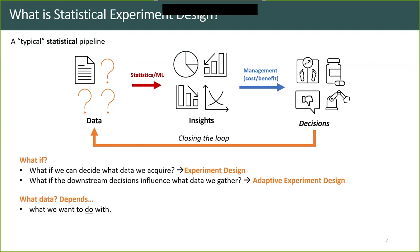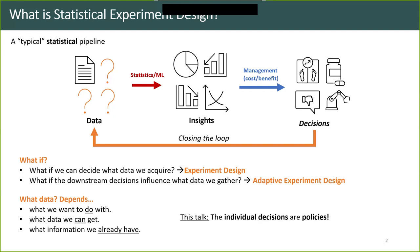If the decisions further influence what data we acquire — closing the loop and iterating — this is referred to as adaptive experiment design. What data we should choose depends on several factors: what we want to do with it, what we can get, and what information we already have. These questions have been the cornerstone of understanding during my PhD. Here we will focus on one specific aspect: what if there is only specific data we can get, namely where individual decisions are policies themselves — defining some kind of sequential decision-making.